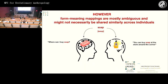However, we know that these form-meaning mappings are not as homogeneous and stable as we think. They are mostly ambiguous, and they must not necessarily be shared similarly across individuals at a given moment. Somebody might think of a bar soap when they hear the word soap, but the other person might be thinking of a liquid soap.